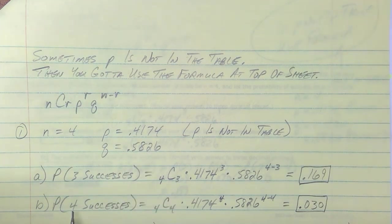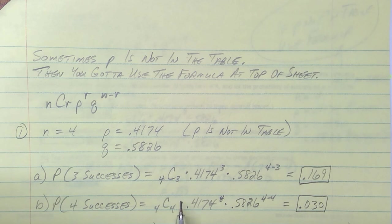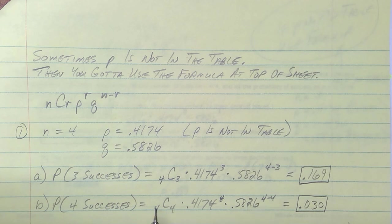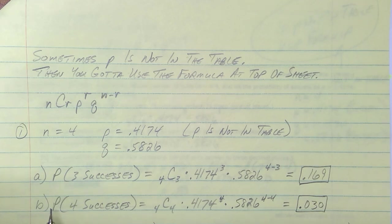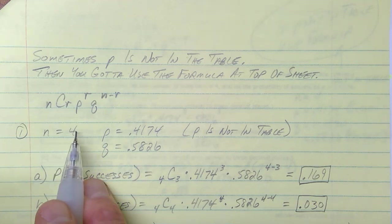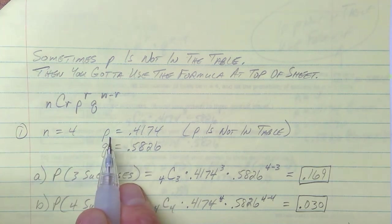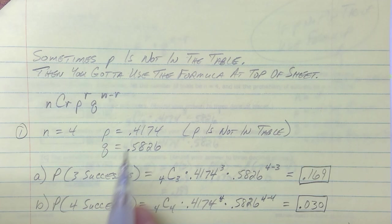What's the probability of winning all four hands? Now it's 4C4 times 0.4174 raised to the 4th power, times 0.5826 raised to n minus r, which is zero. Anything raised to zero is 1, so you can just drop that term. The result is about 0.03 — a 3% probability of winning four out of four hands when the single-hand win probability is roughly 42%.